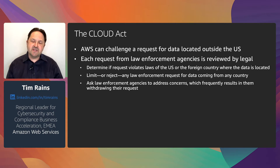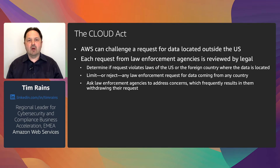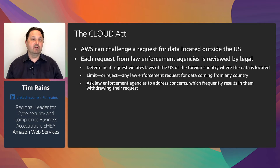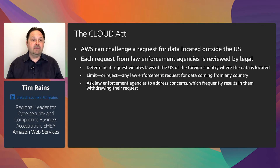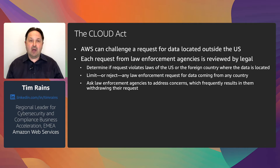When AWS receives a request for data located outside of the United States, we have the right to challenge it and a long track record of doing so. Each request from law enforcement is reviewed by a team of legal professionals. As part of that review, they assess whether the request would violate the laws of the United States or a foreign country, or would violate the customer's rights. Amazon rigorously enforces applicable legal standards to limit or reject outright any law enforcement requests for data coming from any country, including the United States.